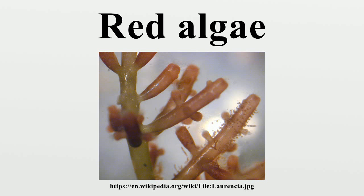Tetrasporophytes may also produce a carpospore, which germinates to form another tetrasporophyte. The gametophyte may replicate using monospores, but produces sperm in spermatangia, and eggs in carpogonium.